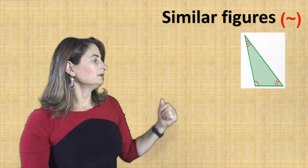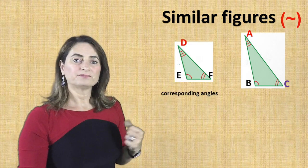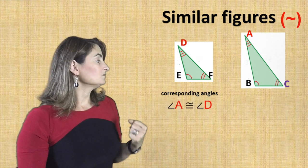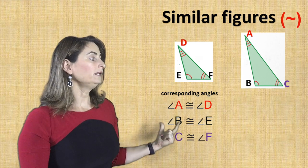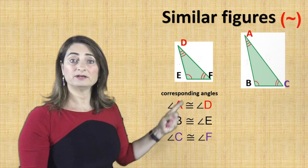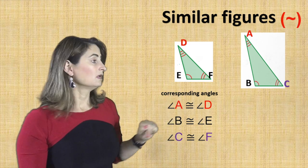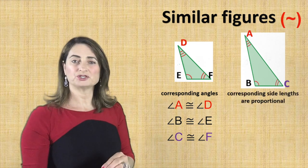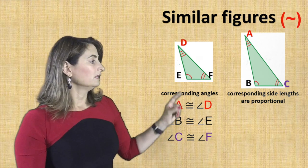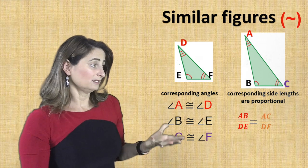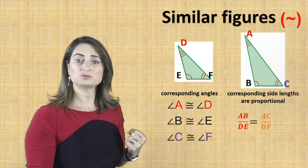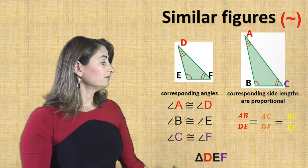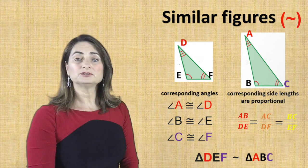Look at triangle ABC and triangle DEF. Name the corresponding angles — are they congruent? Angle A is congruent to angle D, angle B is congruent to angle E, and angle C is congruent to angle F, as indicated by the number of angle semicircles. For corresponding side lengths, AB corresponds with DE, AC corresponds with DF, and BC corresponds with EF. If those ratios are equal, then triangle DEF is similar to triangle ABC.